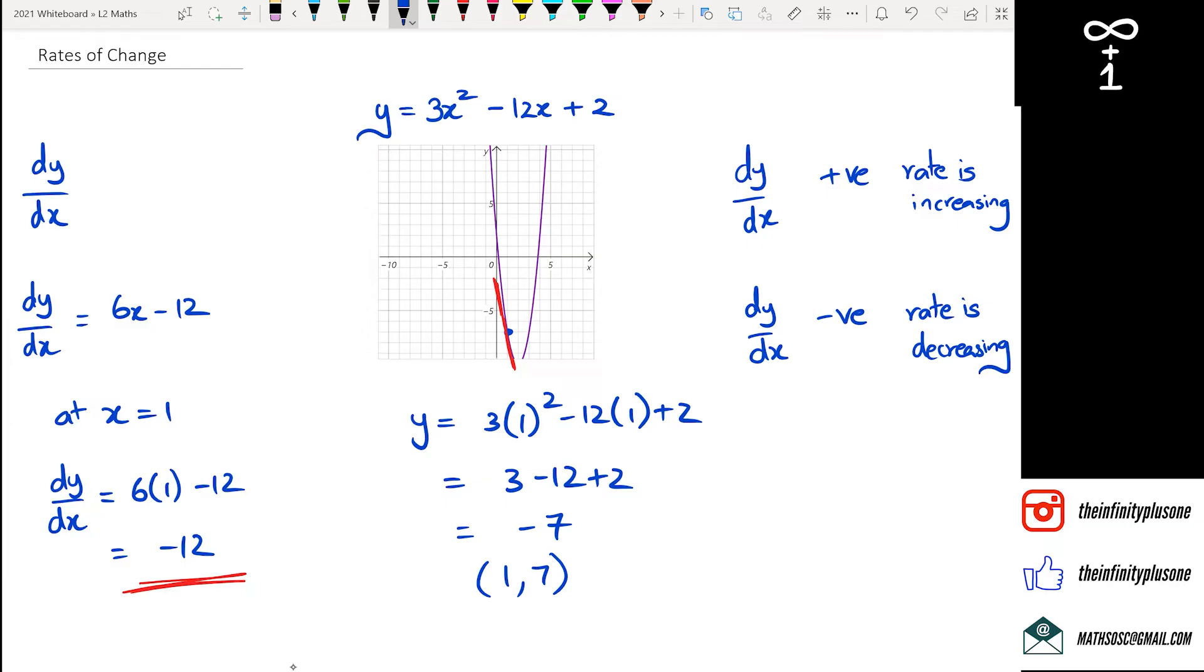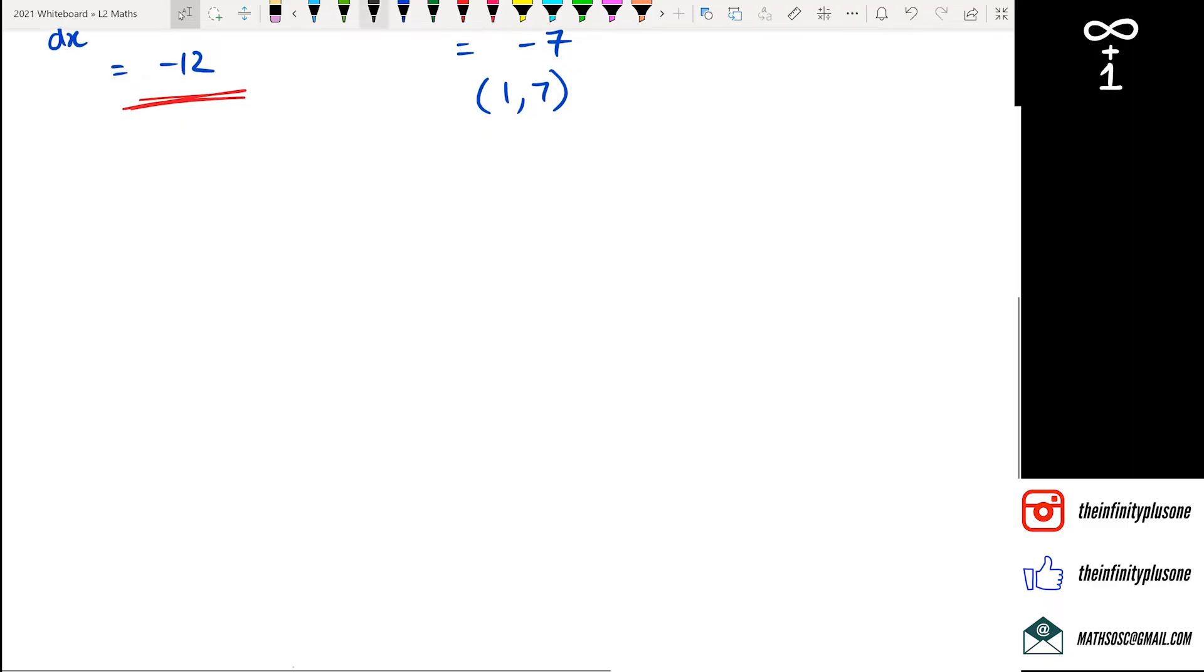Okay, so what about when we look at kind of real world problems? So what we could do is we could have something like an example like this, where a circle's area changes as its radius changes. So we can actually say that area of a circle is equal to πr squared. Then we want to know what is the rate of change when the radius is say, for example, 10 centimeters. This is just a quick little question, guys.